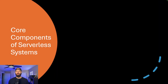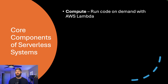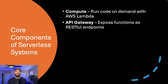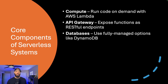Let's walk through the essential building blocks of any serverless architecture. First, we have compute — this is where your code lives. With AWS Lambda, you upload your function and it runs only when it's triggered; you're charged per execution and compute time. API Gateway acts as the front door to your application. It allows you to expose your Lambda functions as REST or WebSocket APIs, and handles request routing, rate limiting, and authorization. Serverless databases like DynamoDB offer highly scalable, fully managed storage that adapts to usage without provisioning.